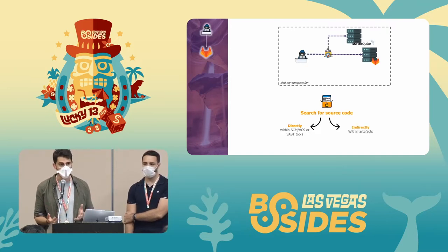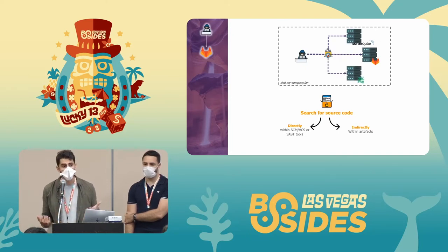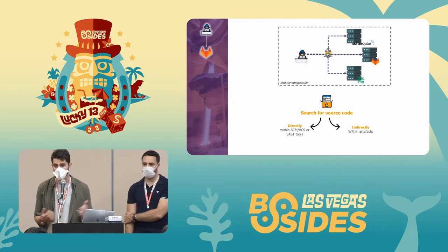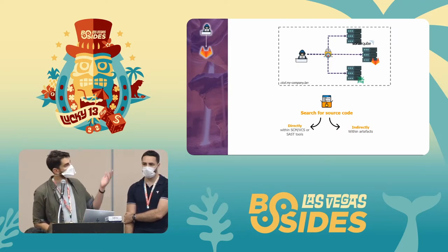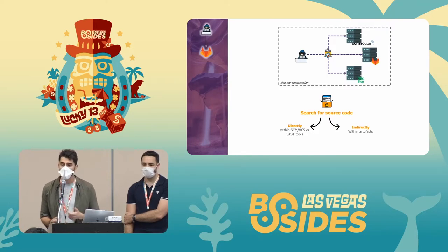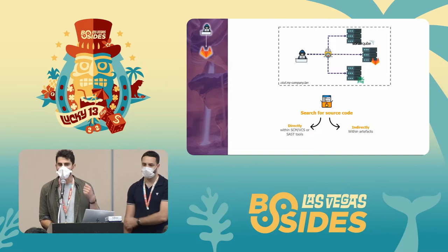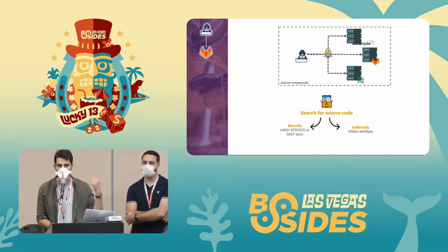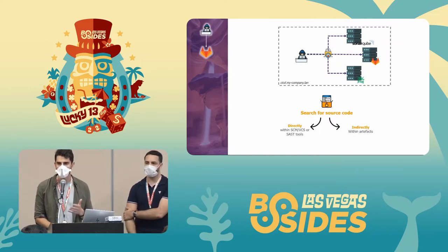If anonymous access isn't available on source code management, there are other ways. Source code flows through basically all parts of your pipeline — you might find it within source code scanning solutions such as Checkmarx or SonarQube, or indirectly within artifacts built by your pipeline. Even if you don't succeed on GitLab or GitHub directly, try other things — it's almost always easy to find source code one way or another within the pipeline.